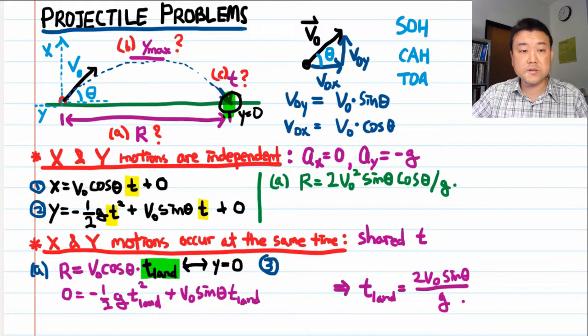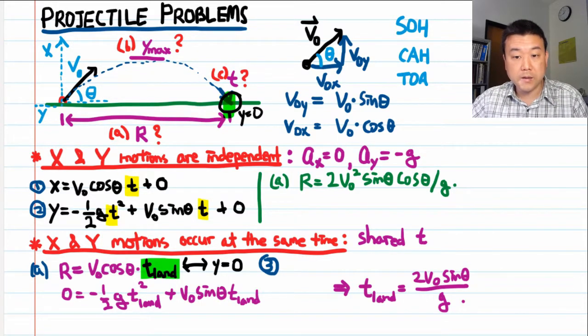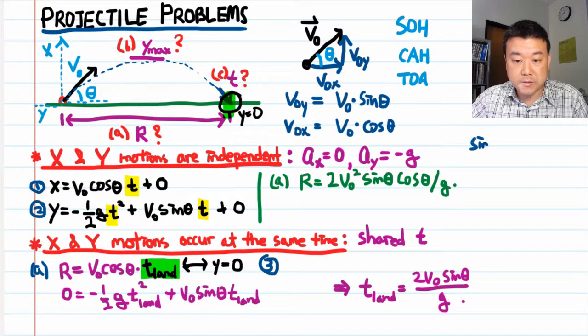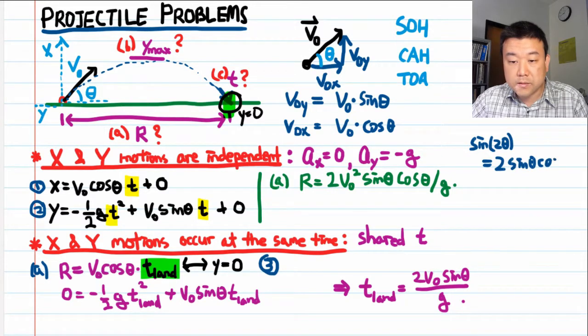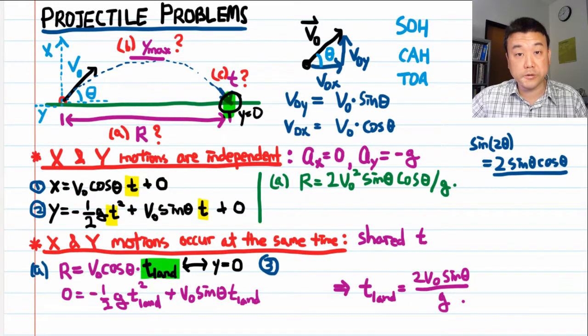Let me leave that as exercise for you. You will need to use the trig identity double angle formula. Specifically, the sine double angle formula says, sine of 2 theta is equal to 2 sine theta cosine theta. And you can actually derive this from the angle addition formula. And I'll remind you of those trig identities when they become more important later in the semester.